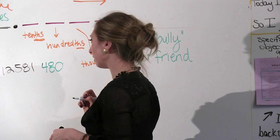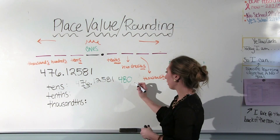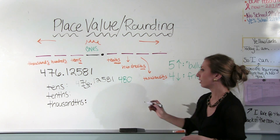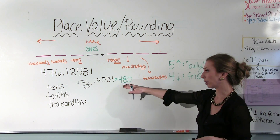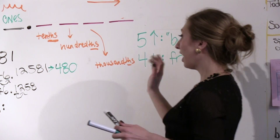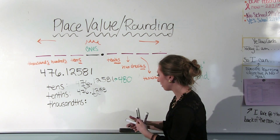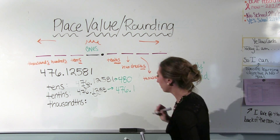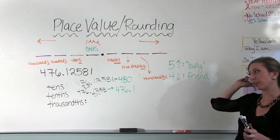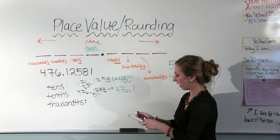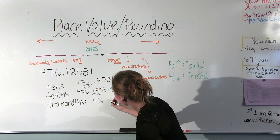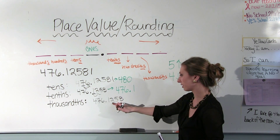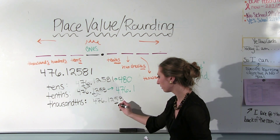Is it closest to 70 or is it closest to 80? The way you tell is you look at the digit next to it. I always had my students underline the place value they were rounding to and point an arrow to the one next to it. If the number next to it is five or above, that number is closest to the higher ten — I call these 'bully numbers' and they're going to bump the other number up. If it's a four or below, it's a friend number — they're not going to mess with that number, they'll just leave.